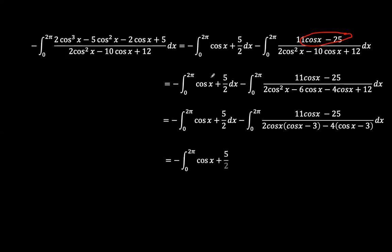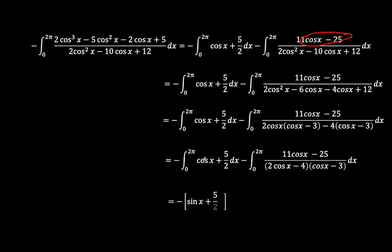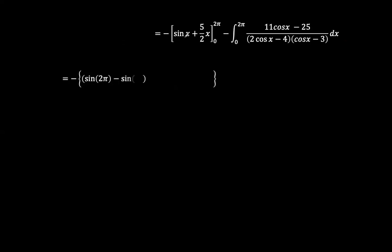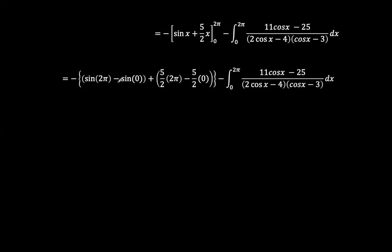We can also factorize the denominator as (2cos(x) − 4)(cos(x) − 3). Integrating the first part: the integral of cos(x) becomes sin(x), and 5/2 integrates to (5/2)x, evaluated from 0 to 2π. We get sin(2π) − sin(0) = 0, and (5/2)(2π) − (5/2)(0) = 5π. With the negative sign outside, this part contributes −5π.